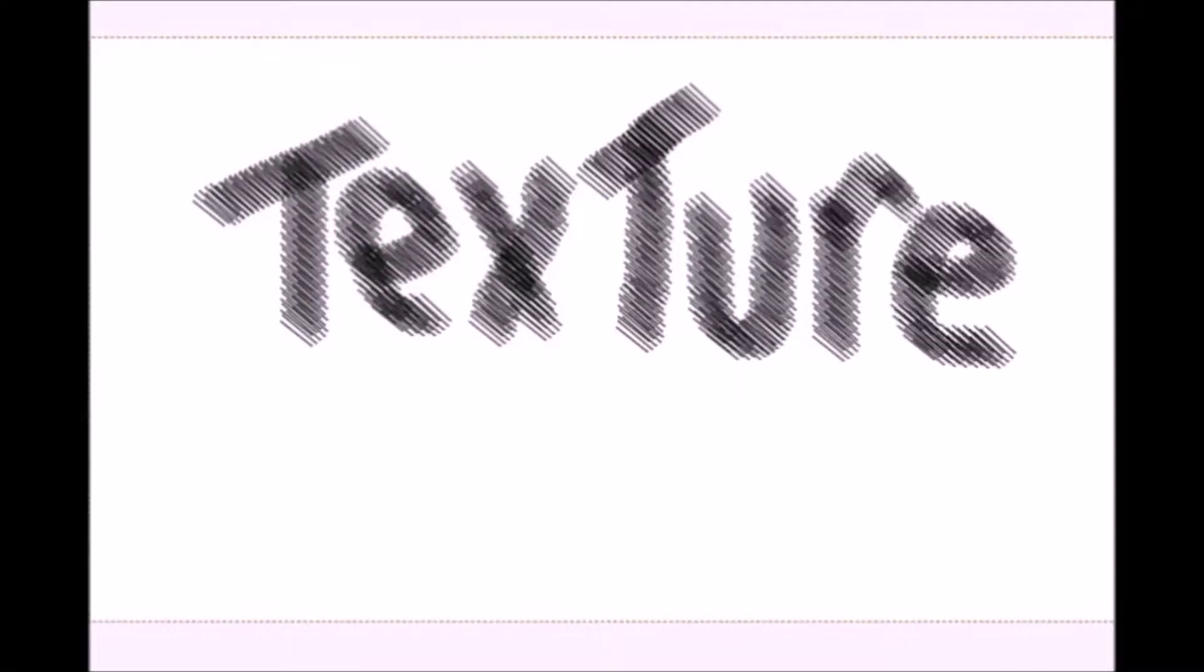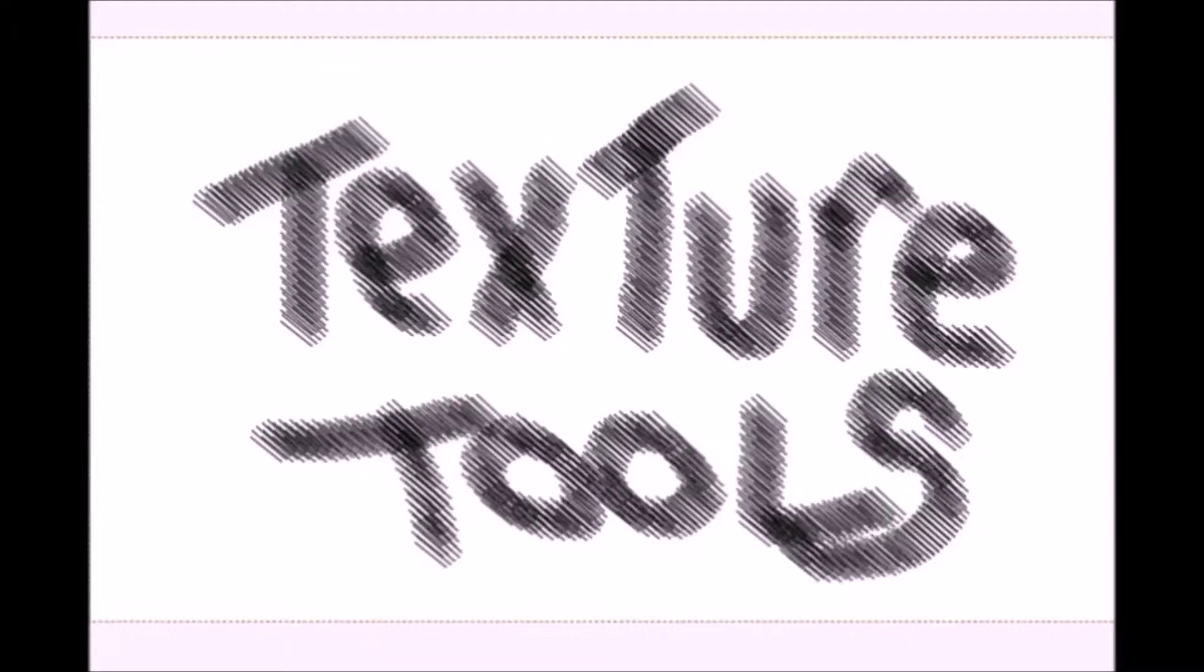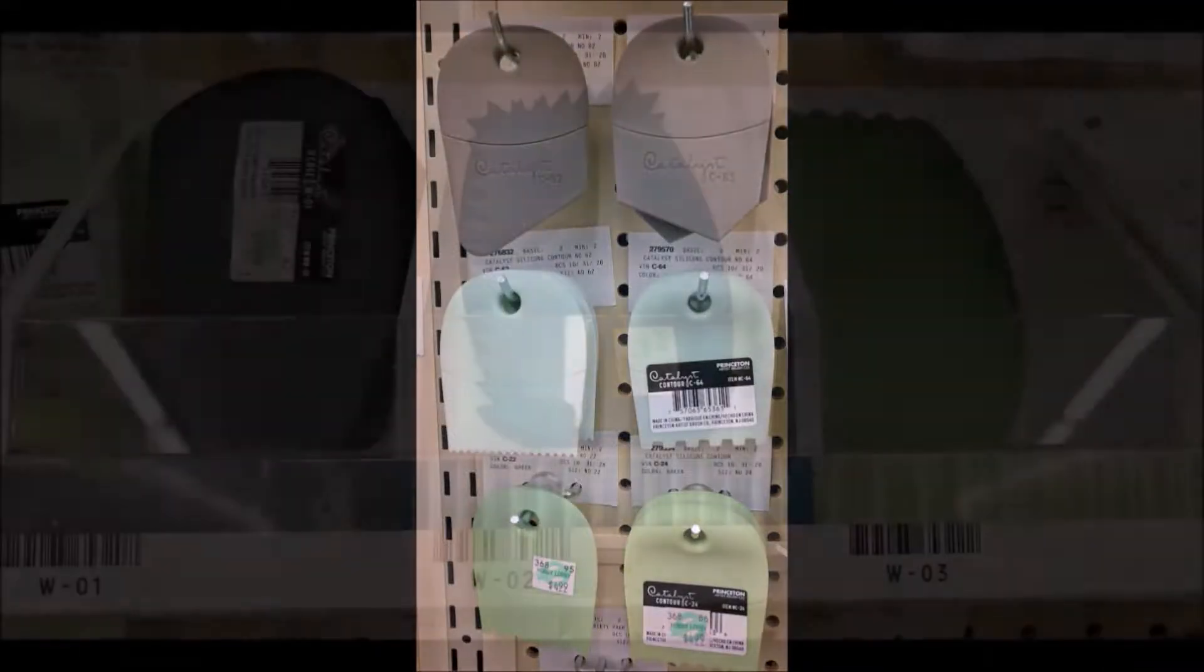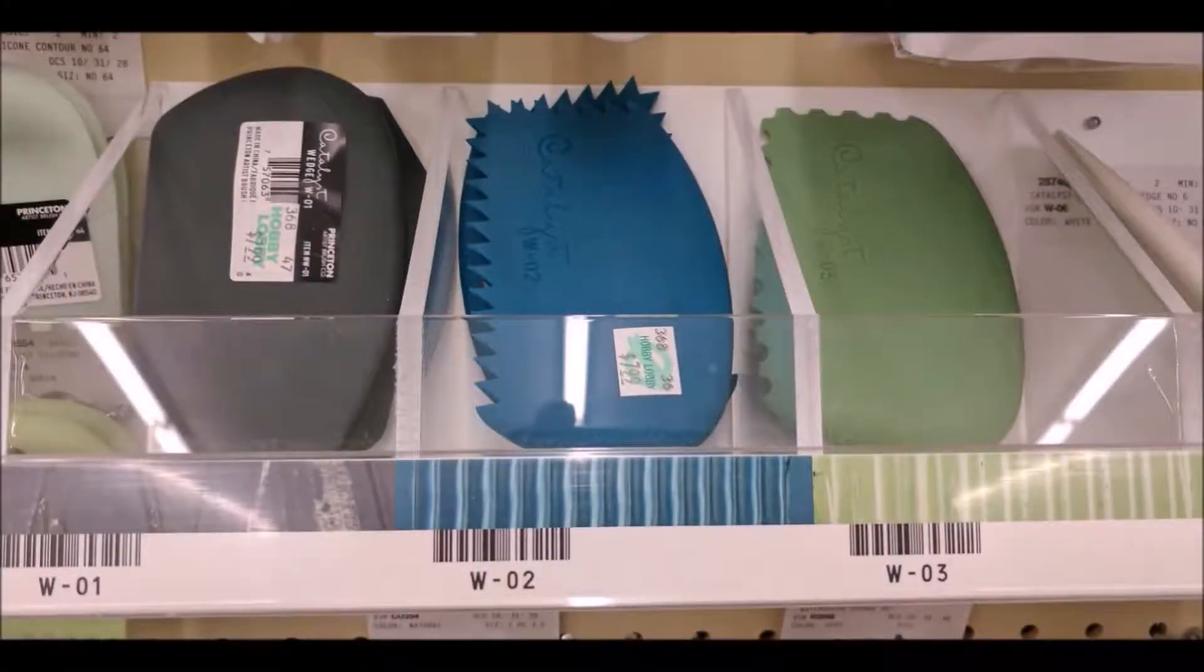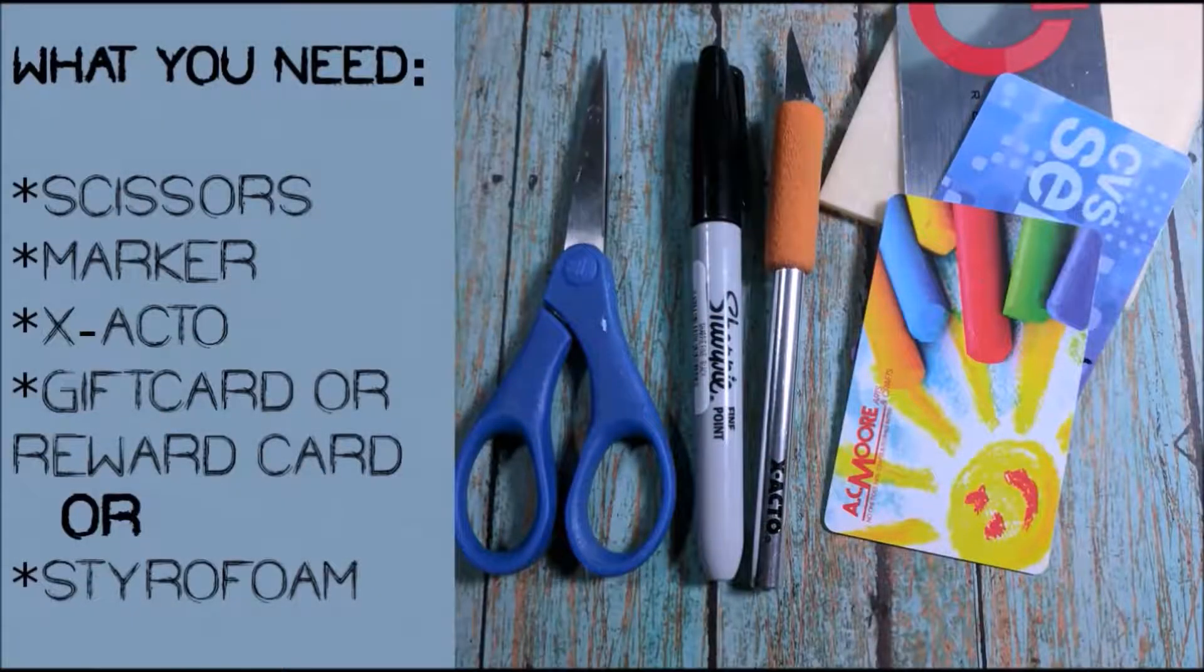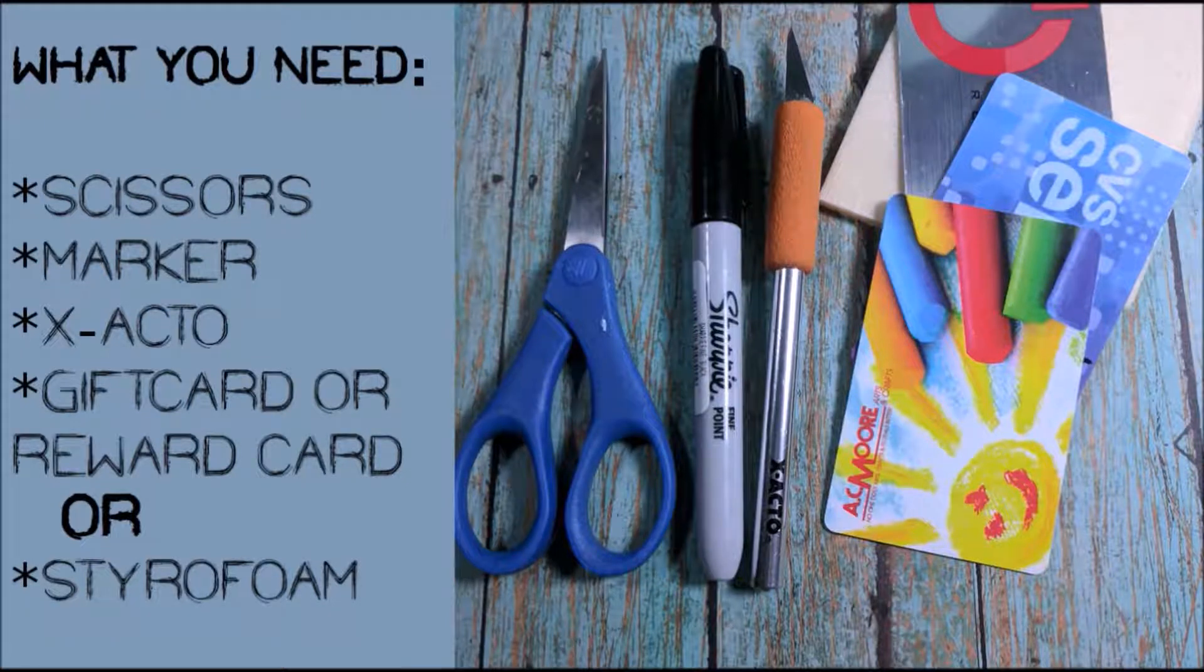Next item is texture tools. When I was in Hobby Lobby, I noticed that the texture tools they have in the acrylic section are anywhere from like five bucks up to like $17.99. It's a little expensive, so if you have scissors, marker, exacto knife, a gift card or reward card, or styrofoam from meat or vegetable tray, you can make your own.